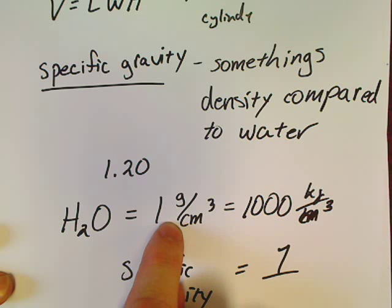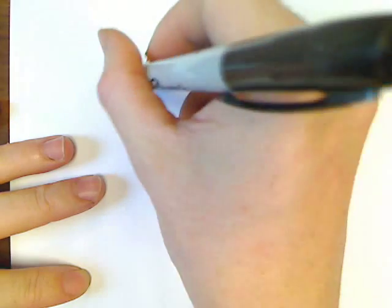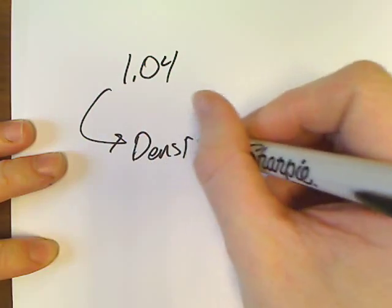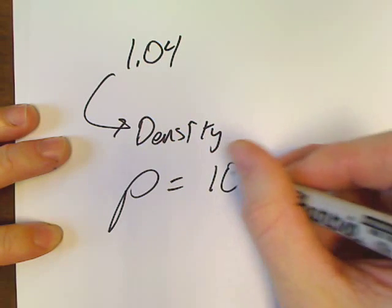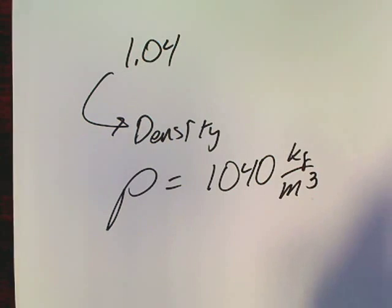So if you see something, for example, if you're reading a problem and in that problem it says that something has a specific gravity of 1.04, then that just means that material's density is equal to 1040 kilograms per meter cubed.